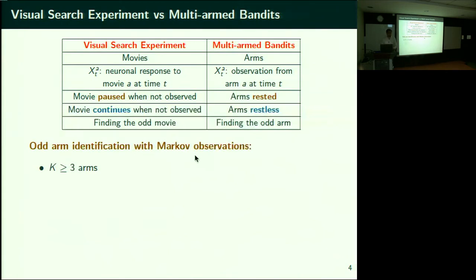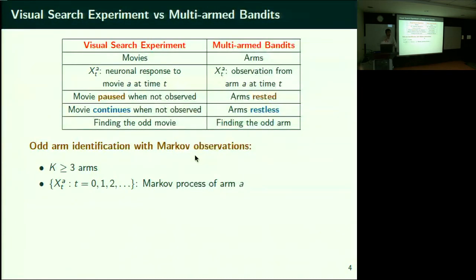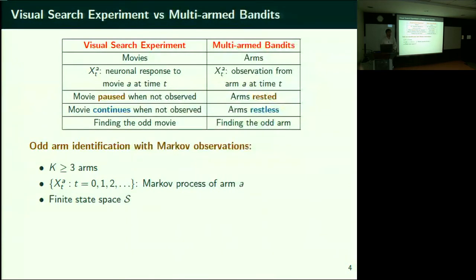Each arm is a Markov process — a sequence of random variables. At time t on arm A, what is the observation? For simplicity, I assume all of these operate on a finite state space. The state is the neuronal response. In the movie example, white Gaussian noise is added to dots with a certain drift, giving uncountably many possible state values.